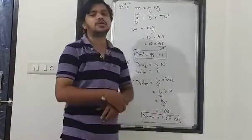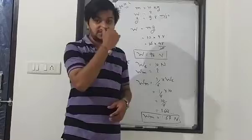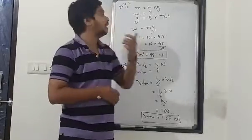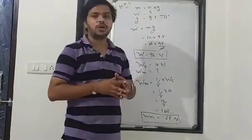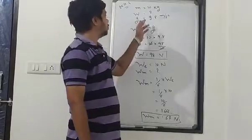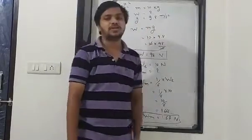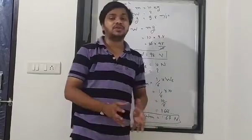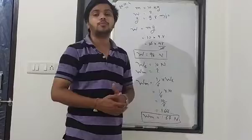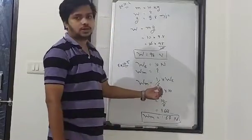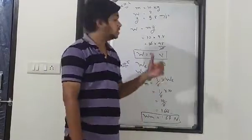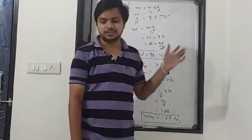Here are the sums related to mass and weight. If mass is given, you can easily find the weight. And if the weight of one object is given, you can find the mass the same way. If the weight on earth is given, you can find the weight on moon using this equation.